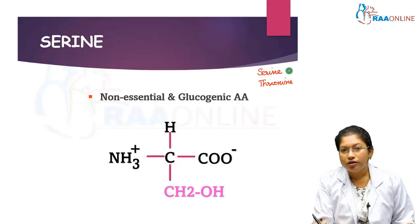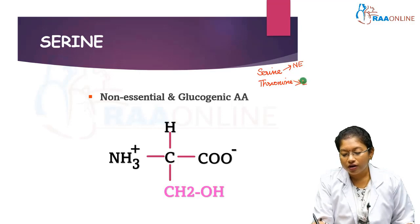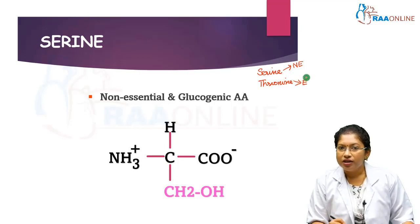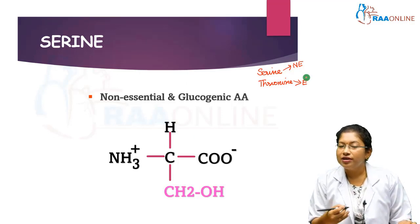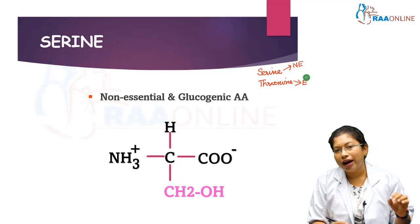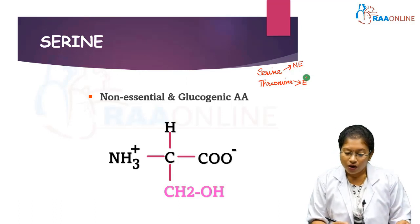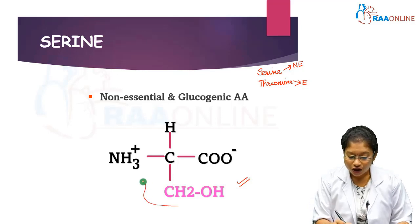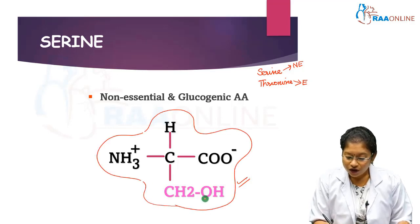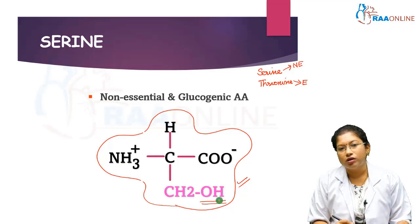Serine is non-essential whereas threonine is essential, meaning we have to supply threonine in our diet. Serine can be synthesized in our body. Both are glucogenic, meaning their metabolic end products lead to glucose production. This is the chemical structure of serine, which contains a hydroxyl group.